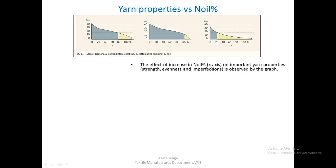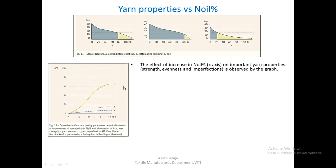The effect of increase in noil is shown on the x-axis in the graph. The effect is shown on the important yarn properties like strength, evenness, and imperfections. On the x-axis we see the noil percentage, which goes up to 20 percent. On the y-axis, the improvement in yarn properties is shown. The line shown as A represents yarn strength, B shows evenness, and C shows imperfections.